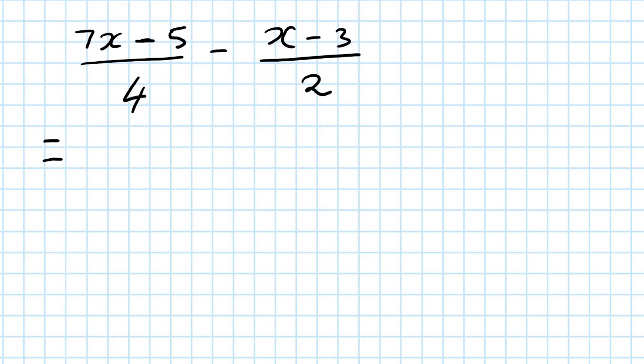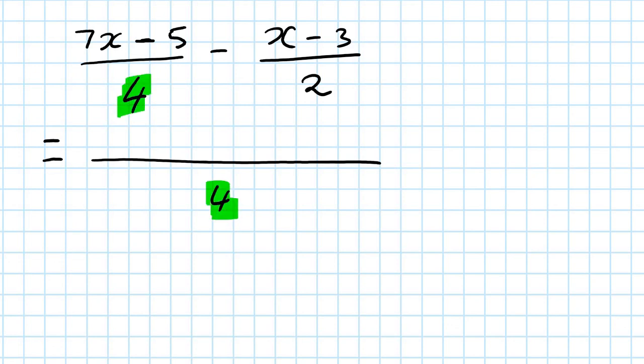Now the common denominator of this expression is 4, because 4 is also a multiple of 2. Write 4 as the denominator. From 4 to 4, I'm not doing anything, so I just copy the numerator out: 7x minus 5.